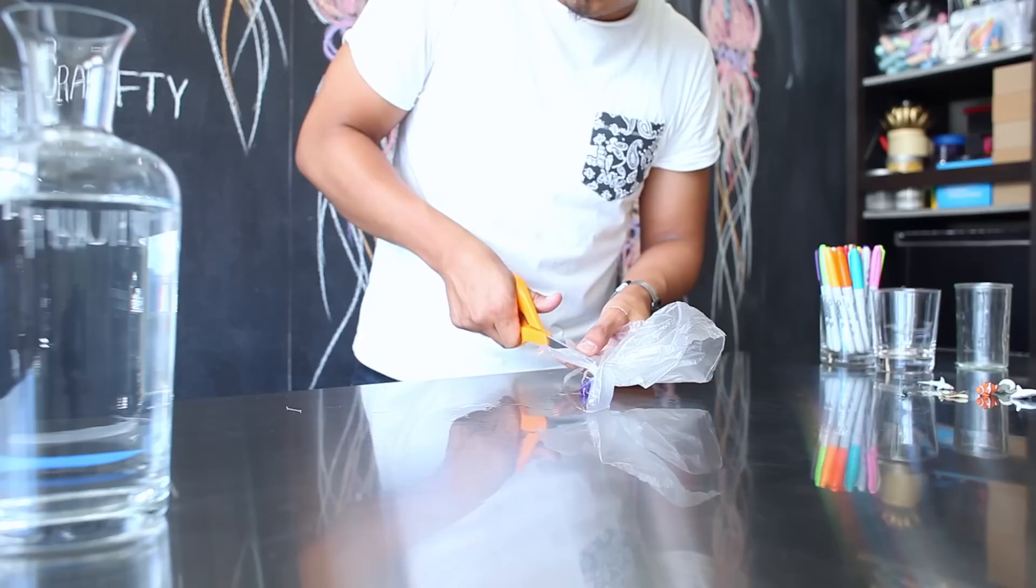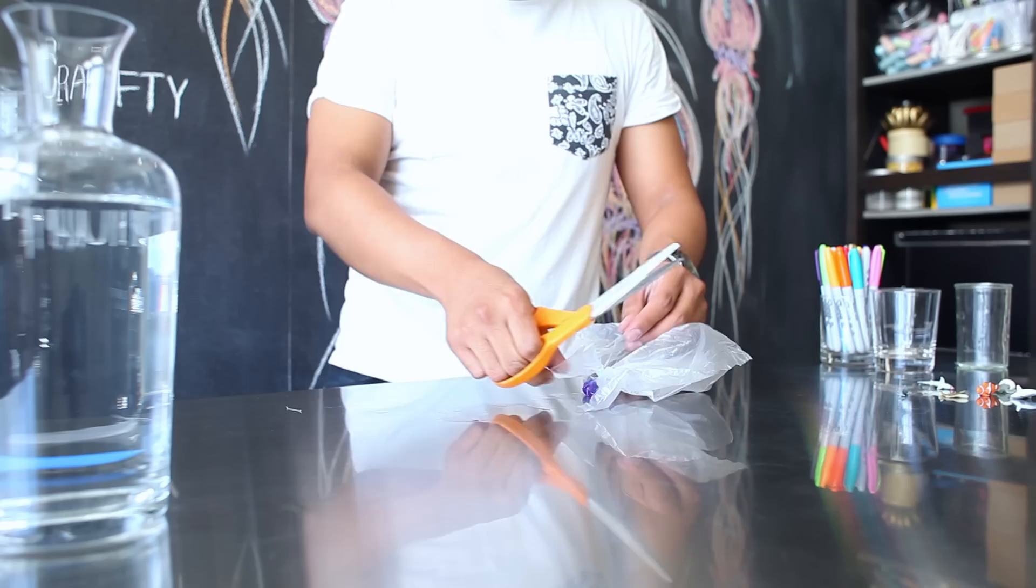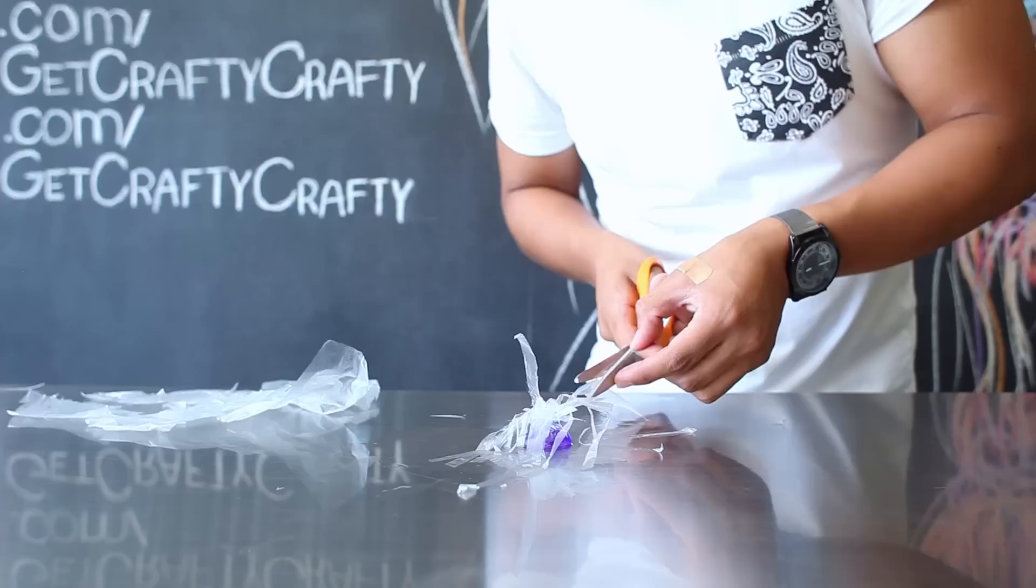When you're cutting the tentacles from your jellyfish you're actually going to remove a lot of the plastic. You want to cut it so that you have tentacles that are about an eighth to a quarter inch thick so that when they move around in the water they actually look like jellyfish tentacles.